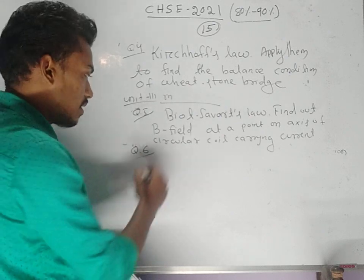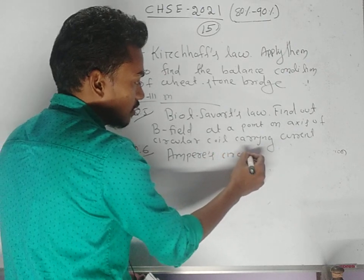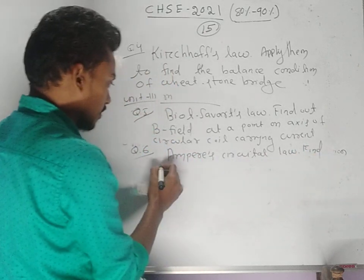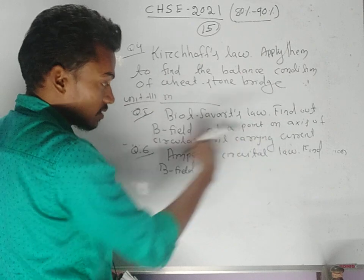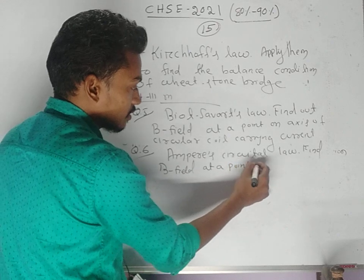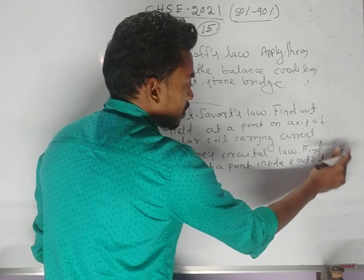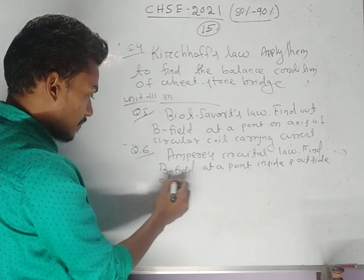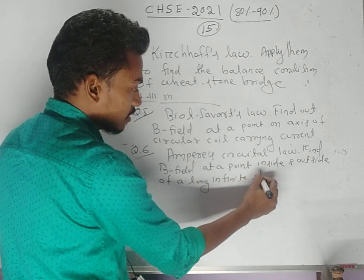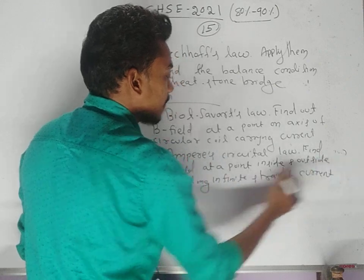Question number six: state Ampere's circuital law and use it to find the magnetic field at a point inside and outside of a long infinite straight current-carrying wire.